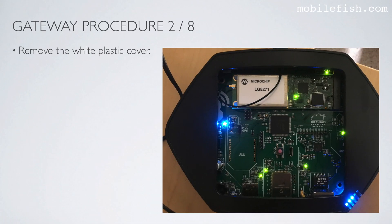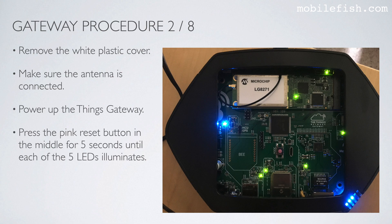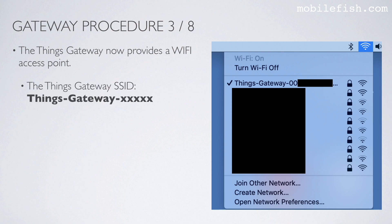Remove the white plastic cover. Make sure the antenna is connected and power up the Things Gateway. Press the pink reset button in the middle for 5 seconds until each of the 5 LEDs illuminates. The Things Gateway now provides a Wi-Fi access point. On your computer, you can see the Wi-Fi access point SSID. The Things Gateway SSID looks like this.